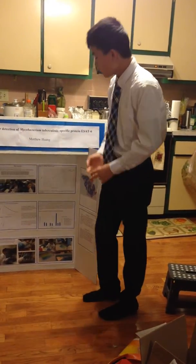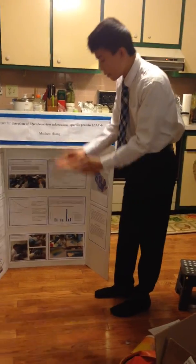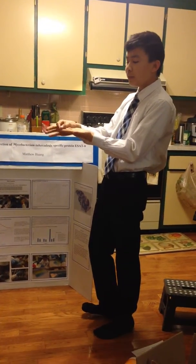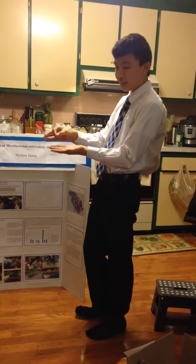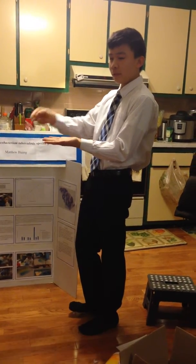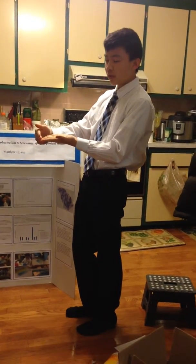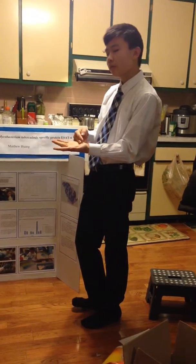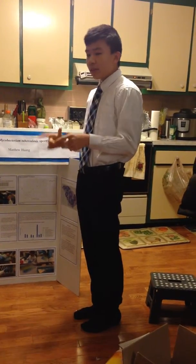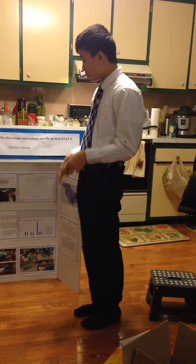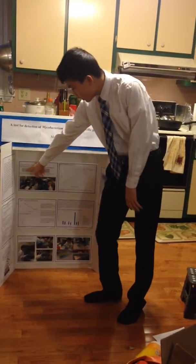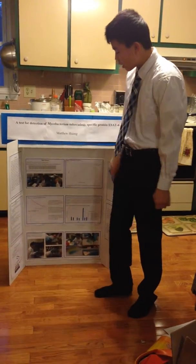The first step was putting serial dilutions in each row — basically decreasing amounts of antigen in rows 1 through 5, with the most in row 1 and none in row 10. After that, I read the colors under a spectrophotometer at 450 nanometers, and these are the optical density values that I got.